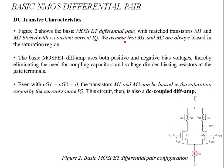Let's consider a basic NMOS differential pair. There are two identical NMOS transistors M1 and M2, referred to as matched. Matched means these transistors are fabricated on the same silicon wafer, giving them the same conduction parameter, threshold voltages, and temperature response. M1 and M2 are identical, having the same threshold voltage, conduction parameters, and electron mobility.